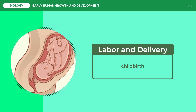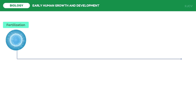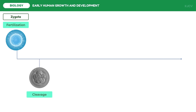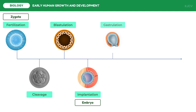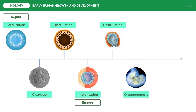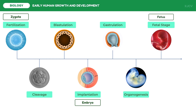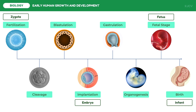To wrap up, the timeline of early human growth and development begins when a sperm fertilizes an egg, forming a zygote. The zygote undergoes cleavage until it reaches the blastocyst stage, called a pre-embryo. Once implanted in the uterus, pregnancy starts and the offspring is an embryo. Gastrulation leads to organ formation, at which point the embryo is called a fetus — ending the first trimester. The second and third trimesters are fetal stages with continuous organogenesis until the fetus reaches full term, becoming an infant ready for postnatal growth and development.